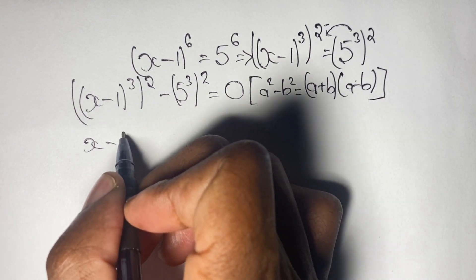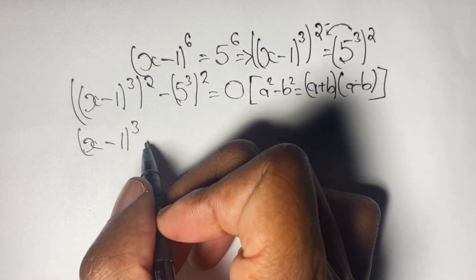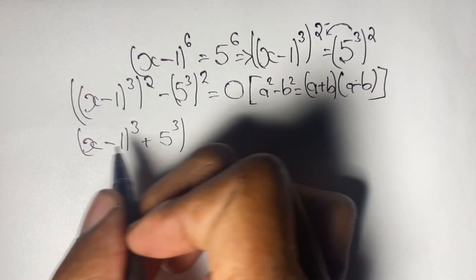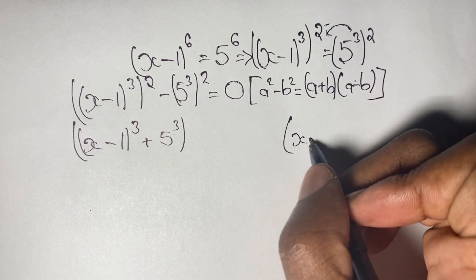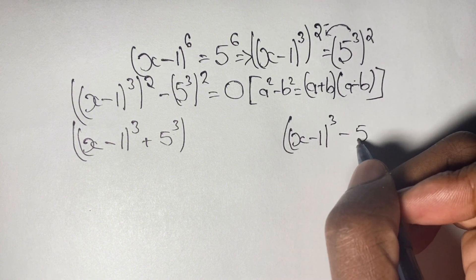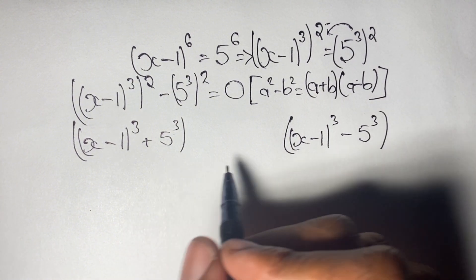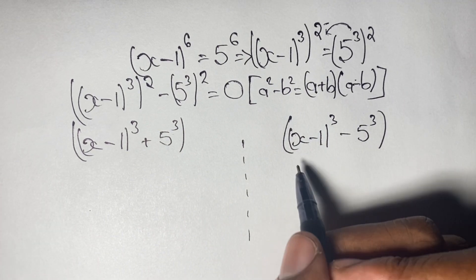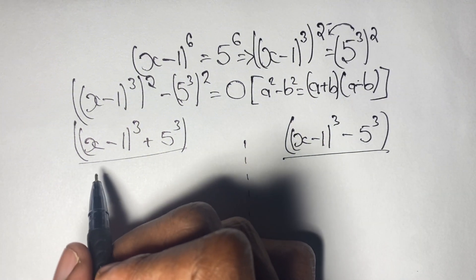Using this law, we can now have (x minus 1)^3 plus 5^3, in one bracket, times (x minus 1)^3 minus 5^3 in another bracket. Notice that we separate these two expressions because we are going to solve them individually, and both are also equal to 0.